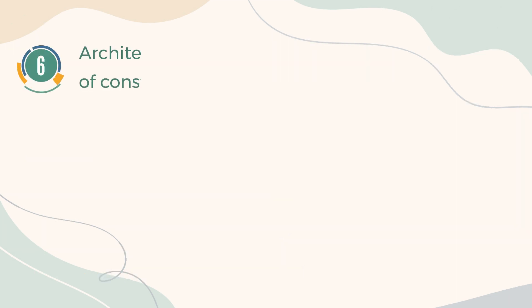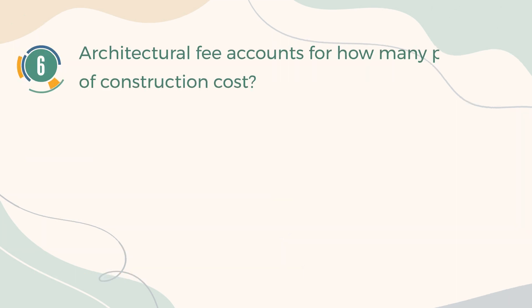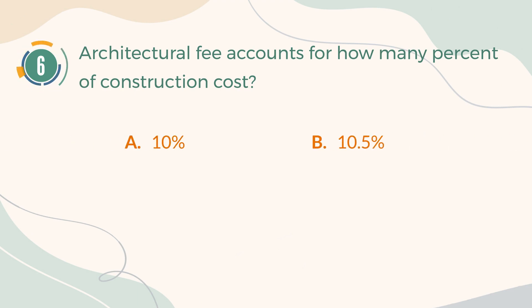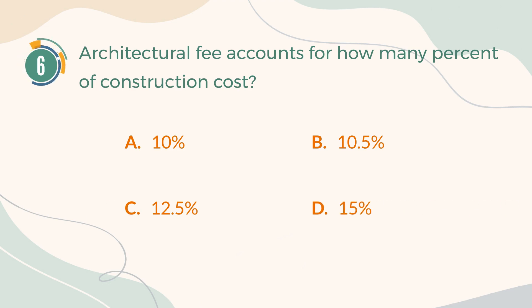Number 6. Architectural fee accounts for how many percent of construction cost? A. 10%. B. 10.5%. C. 12.5%. D. 15%. The correct answer is A: 10%.